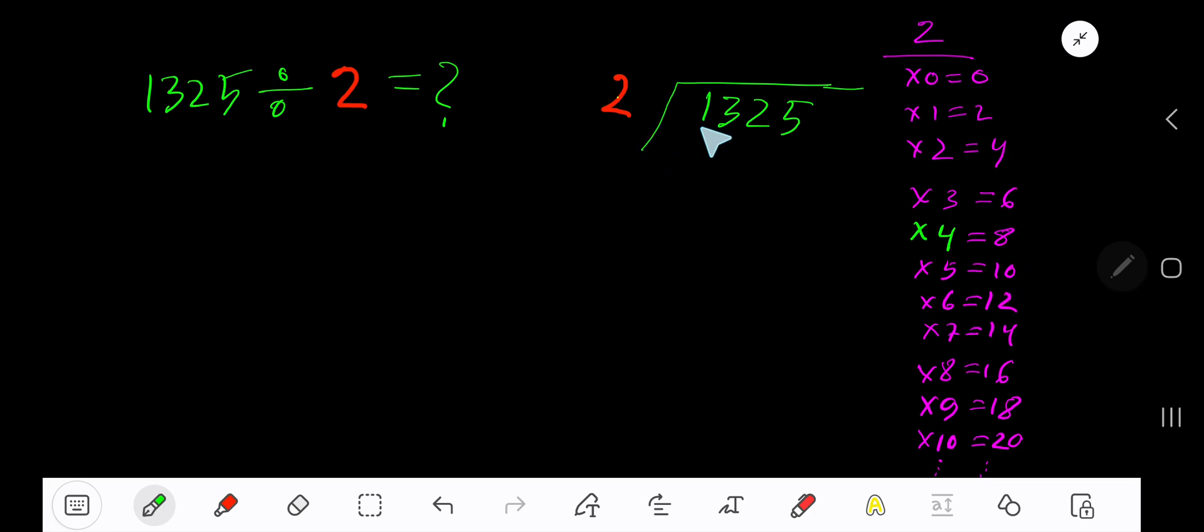2 goes into 1 how many times? 0 times, as 1 is less than 2. 0 times 2 is 0, subtract, 1. Bring down the next digit. 2 goes into 13 how many times? 7 times is 14, which is greater, so 6 times. 6 times 2 is 12, subtract, 1. Bring down.